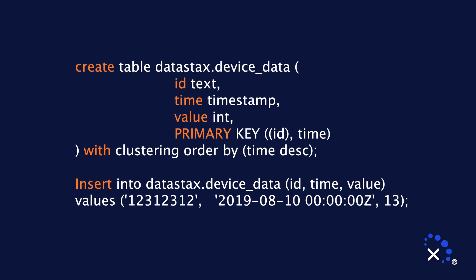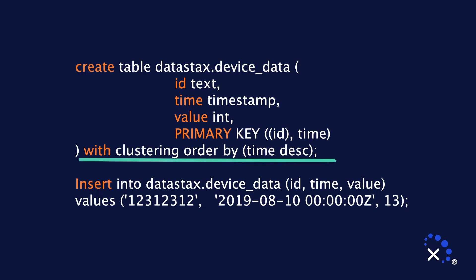An example of a time series efficient table would be the following. We're going to create a table called device data. It has an ID column of text, a time as timestamp, a value as an int. The key part is the primary key — the ID is our partition key and time is a clustering column, with clustering order by time descending. This works really well for time series data because the data will be pre-ordered with the latest piece of data at the top. Here is a concrete example of how to insert data into the table we just created.